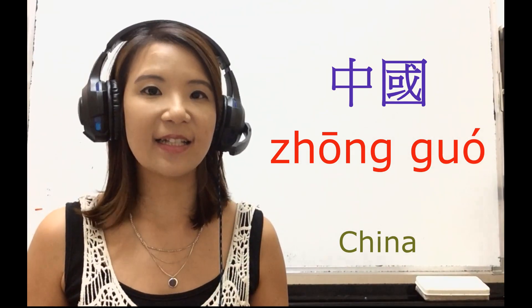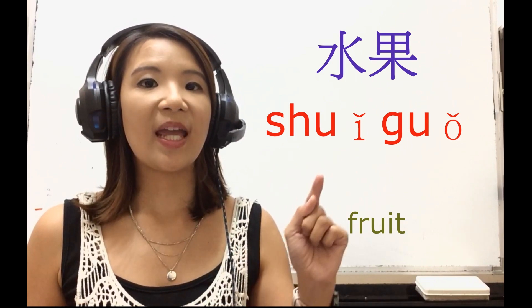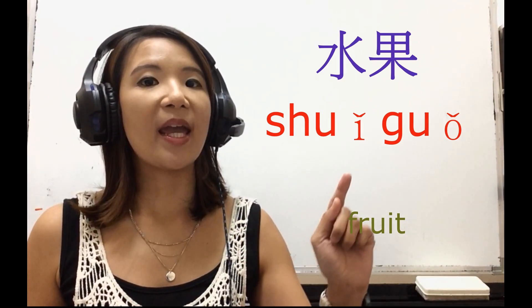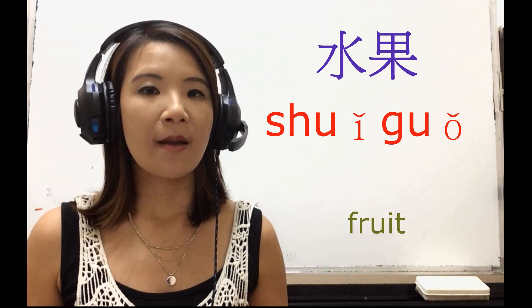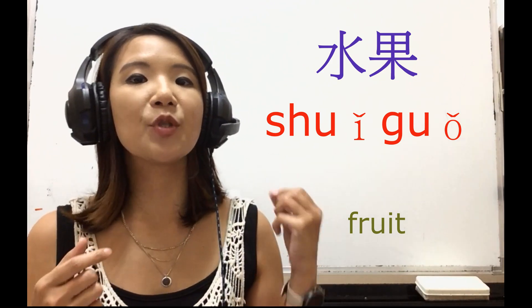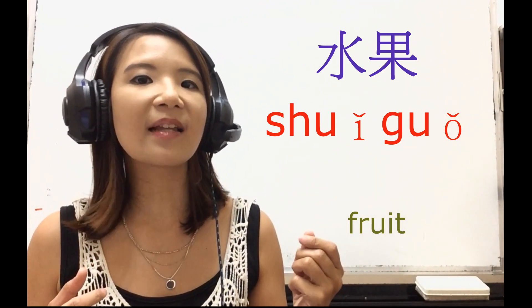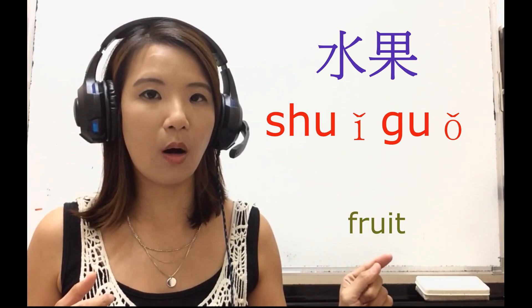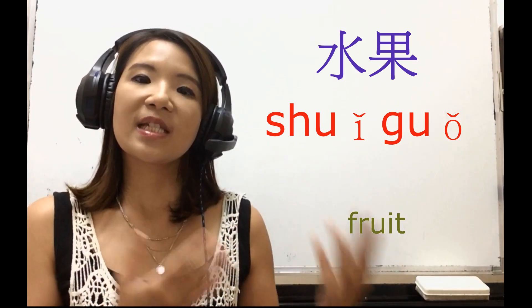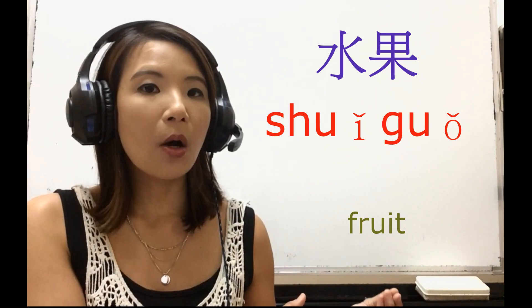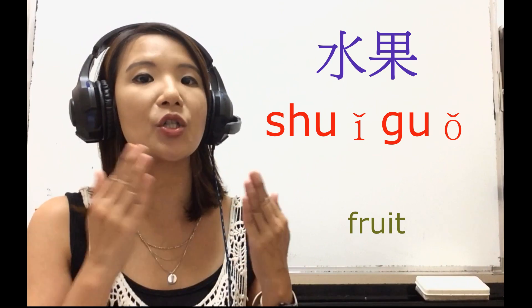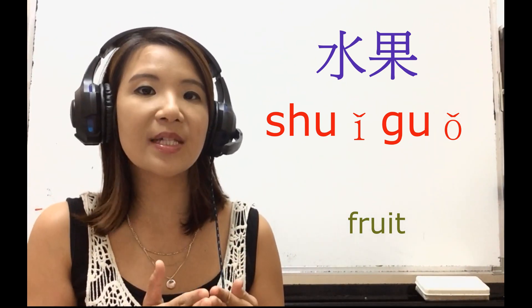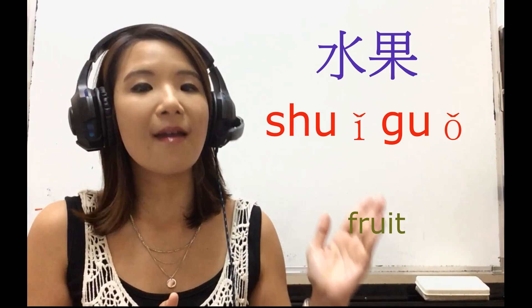So 中国 is China, the country. Second example: 水果 — 水果 is fruit. As you can see, when I'm doing the tone mark with my hand, I'm doing something like 水果. You see on the screen that is third, third tone, but don't forget the tone-changing rules. When two third tones are together, you are actually pronouncing second tone and then third tone.